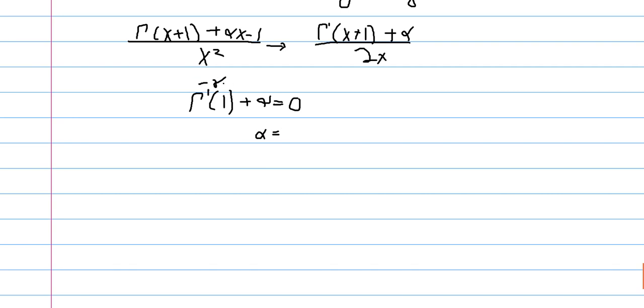Or negative Euler-Mascheroni constant, which means that alpha is just equal to the Euler-Mascheroni constant, or 0.577.